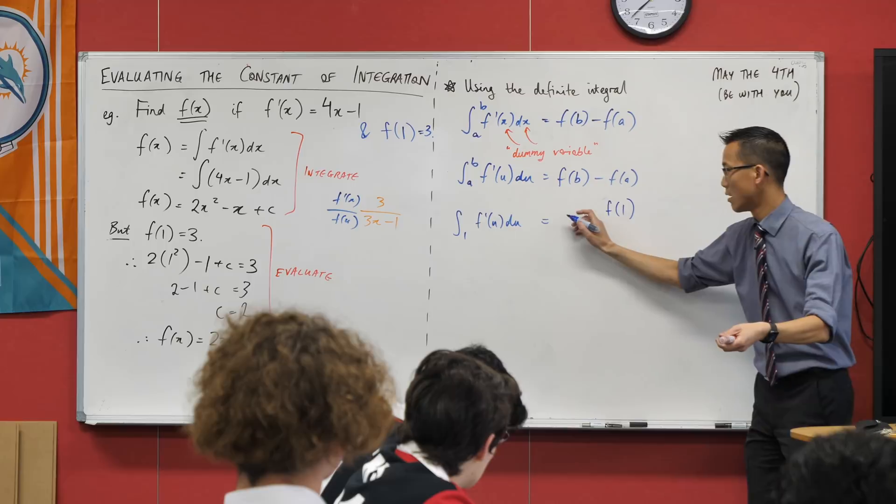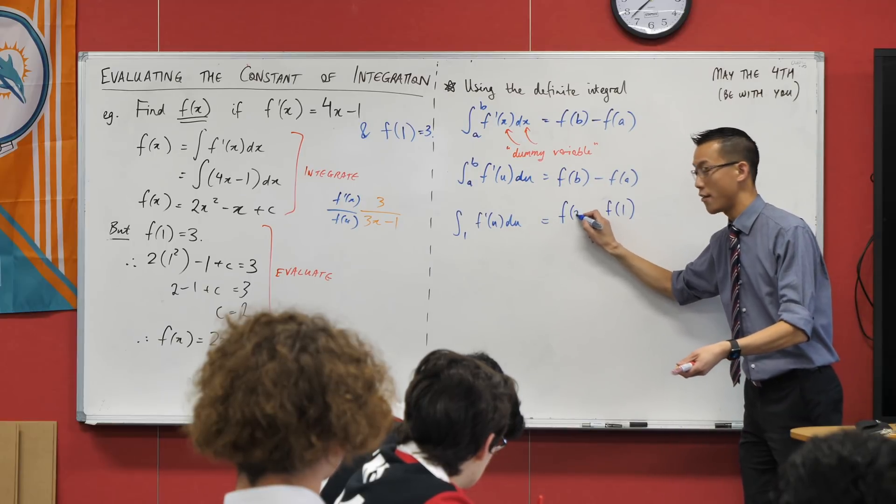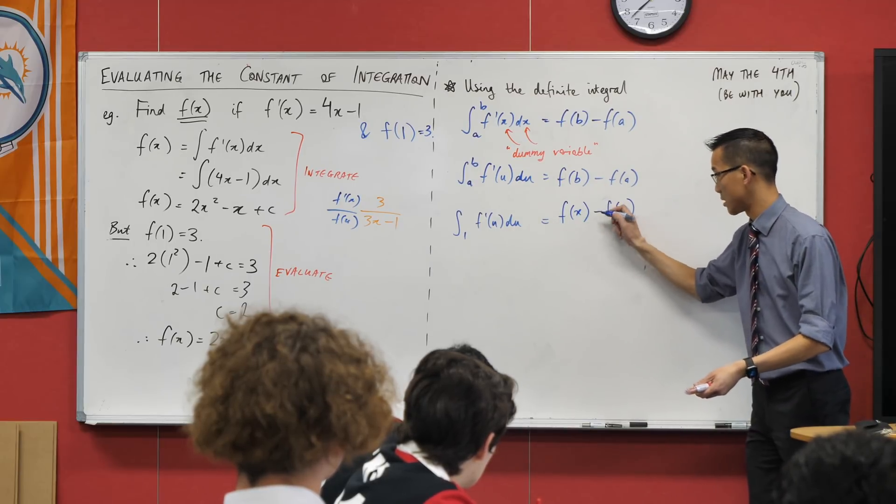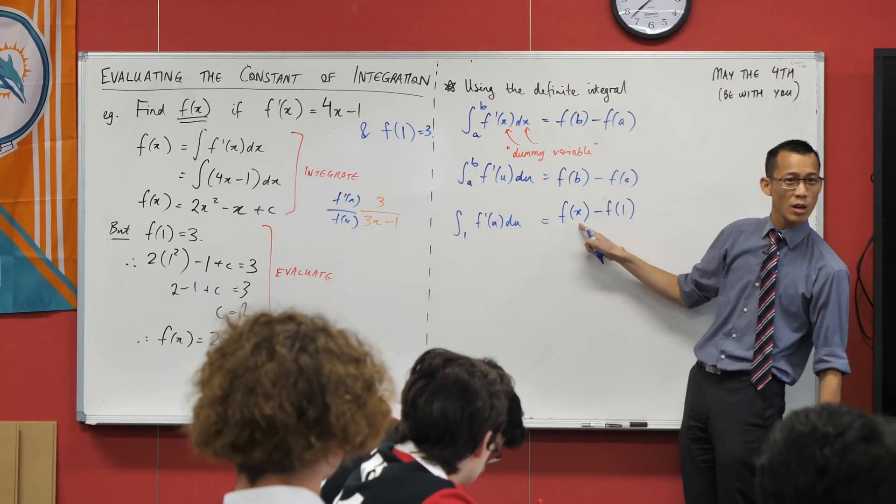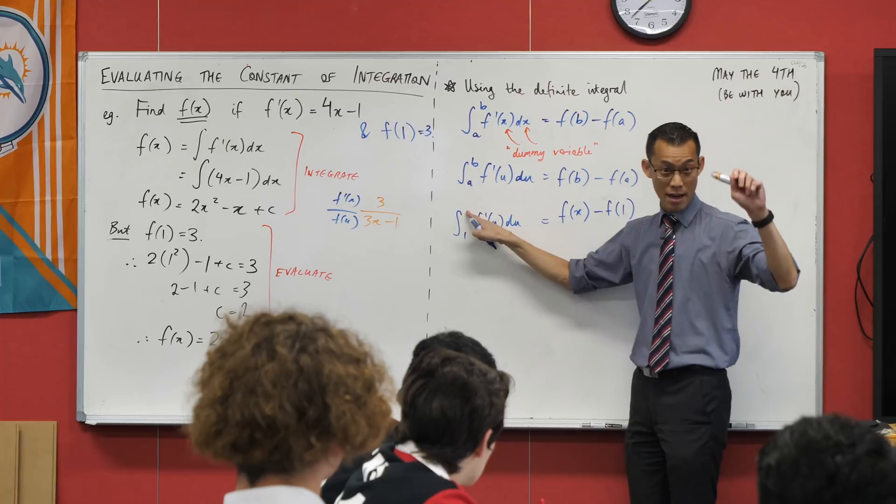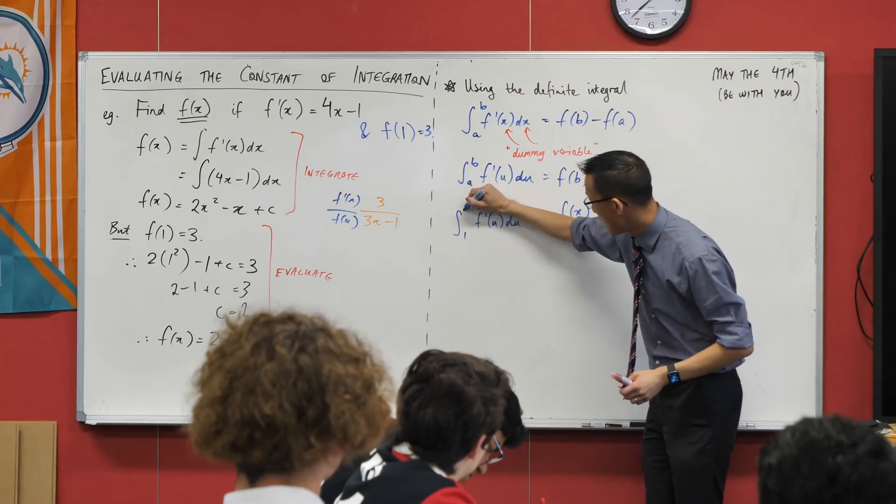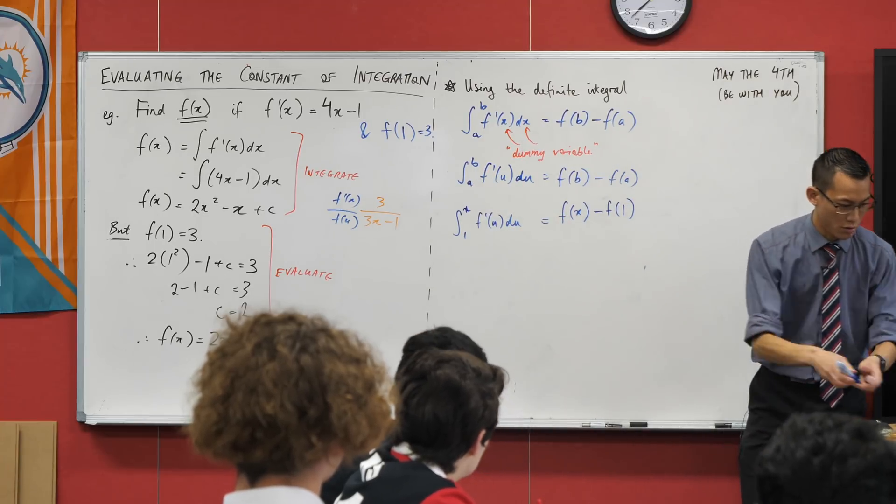I'm going to write f of x. There's a takeaway there, right? If I made that an X, where's the other place the X goes? Just over here. It's the upper boundary. Does that make sense?